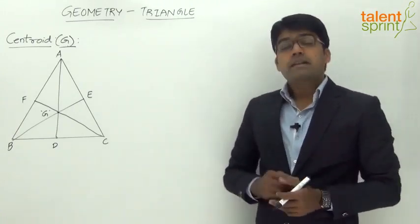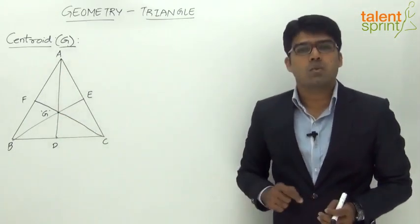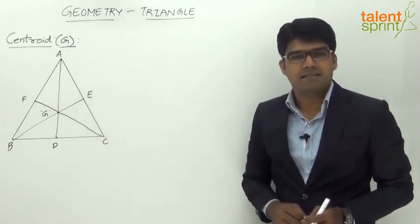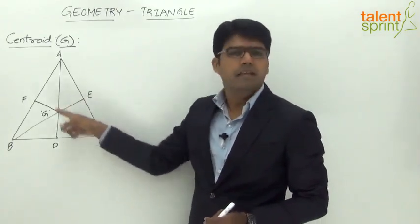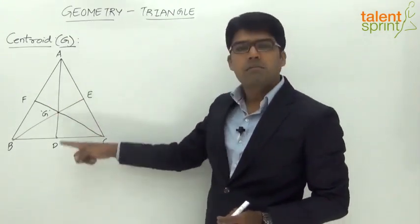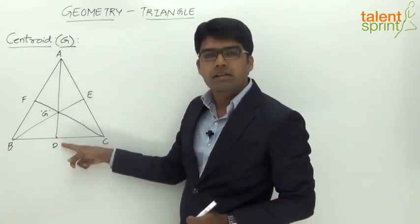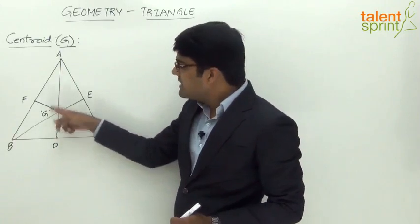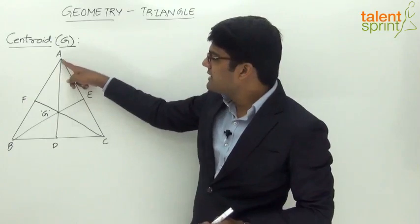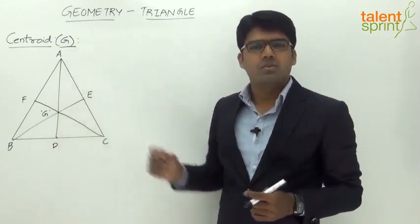One important and interesting fact is that the centroid always divides the median in the ratio of 2:1, where two parts are on the vertex side and one part is on the base side. For example, looking at median AD — points A, G, and D are collinear, and G divides AD in the ratio 2:1. The distance from A to G is two parts and the distance from G to D is one part, so AG/GD = 2/1.